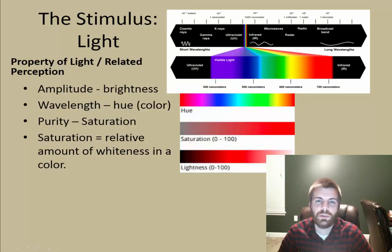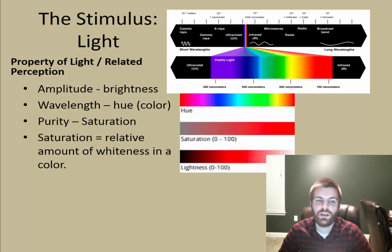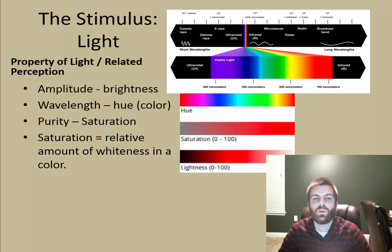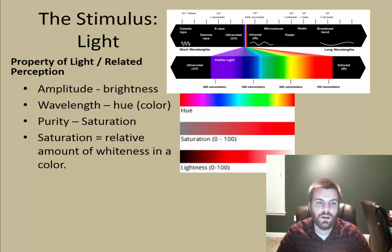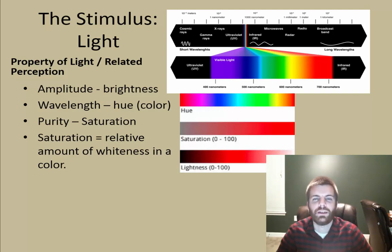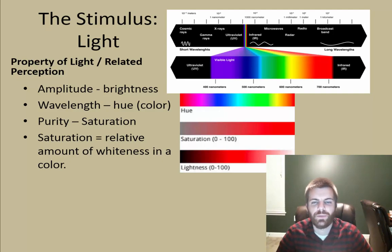First we have the stimulus, which is going to be light. Here we have some properties of light and the related perception: amplitude, wavelength, purity, and saturation. In light, amplitude generally refers to brightness, wavelength to the hue or color — and you should know that color is a psychological experience, there is not really something known as color. Purity, which is saturation, refers to the amount of white in the color. Generally the more saturation it has, the bolder and brighter it's going to look.